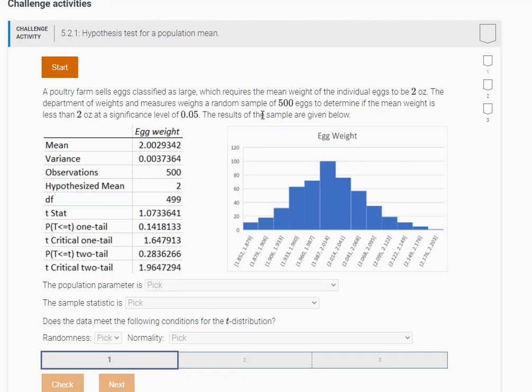This is for hypothesis testing a population mean. So let's look at this one here. A poultry farmer sells eggs classified as large, which require the mean of the individual eggs to be two ounces. Basically, there's probably a law that says if you want to sell your eggs as large, on average they have to be two ounces. The Department of Weights and Measures weighs a random sample of 500 eggs to determine if the mean weight is less than two ounces.